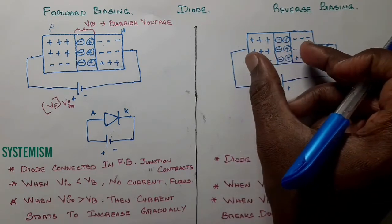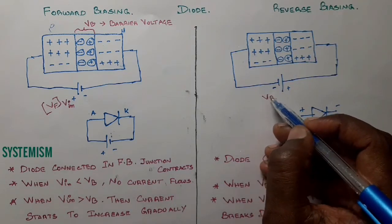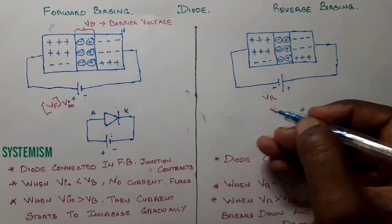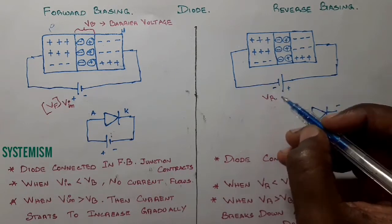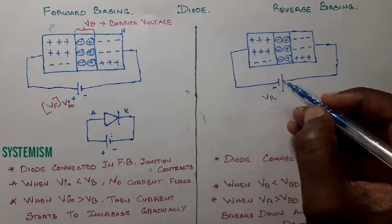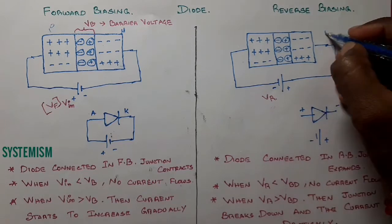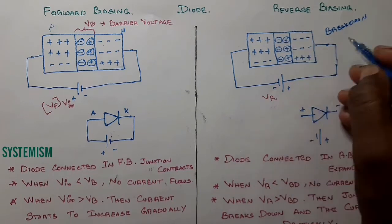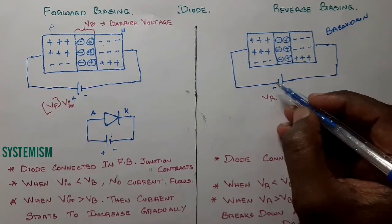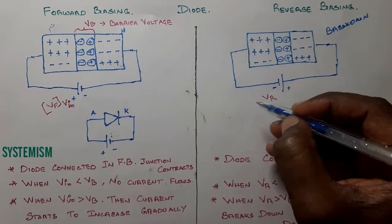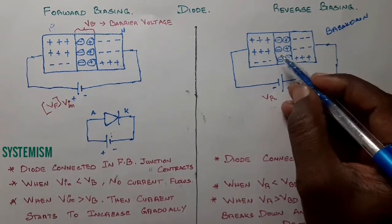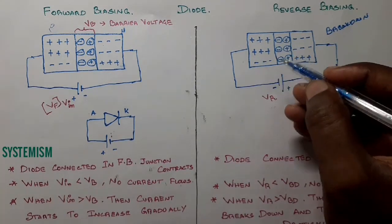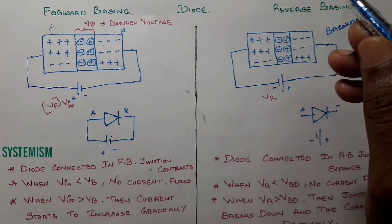Due to this attraction on both sides, the depletion layer slowly expands. If we continue increasing the reverse voltage further, after a particular voltage called the breakdown voltage, the junction breaks down and the current increases very drastically.